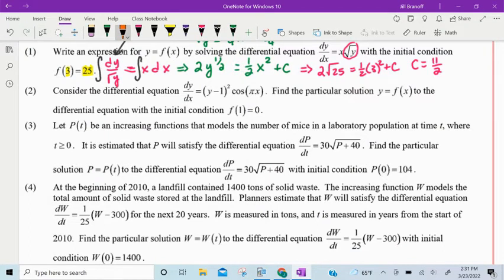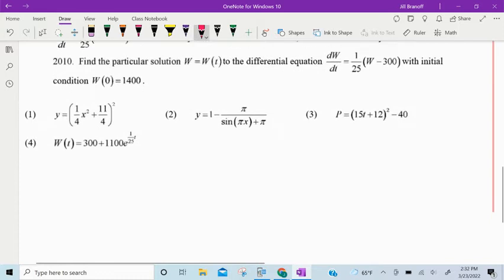Onward, number 2. Consider the differential equation dy dx equals y minus 1 squared times cosine of pi times x. Cosine of pi x. Find the particular solution, y equals f of x, to the differential equation with initial condition f of 1 equals 0. I know I'm going to need a little more space, so let me scroll down for this one.